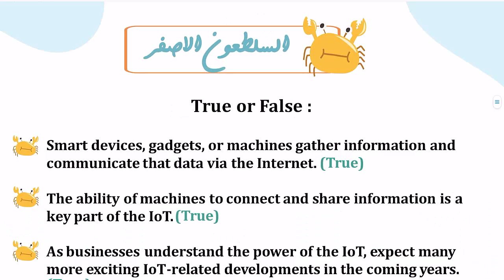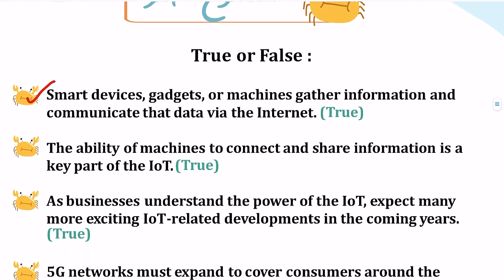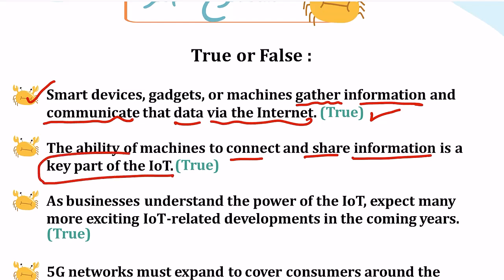بالنسبة للأسئلة True or False: السؤال الأول يقول إن الأجهزة الذكية والماكينات كلها تجمع معلومات وتتواصل عبر الإنترنت - كلامه صحيح. البوينت الثانية: قدرة الأجهزة على التواصل وتشارك المعلومات هي key part of Internet of Things - بالفعل هي الجزء الأساسي، وإنترنت الأشياء ما كانت لتوجد لولا هذه القدرة. كلامه صحيح.